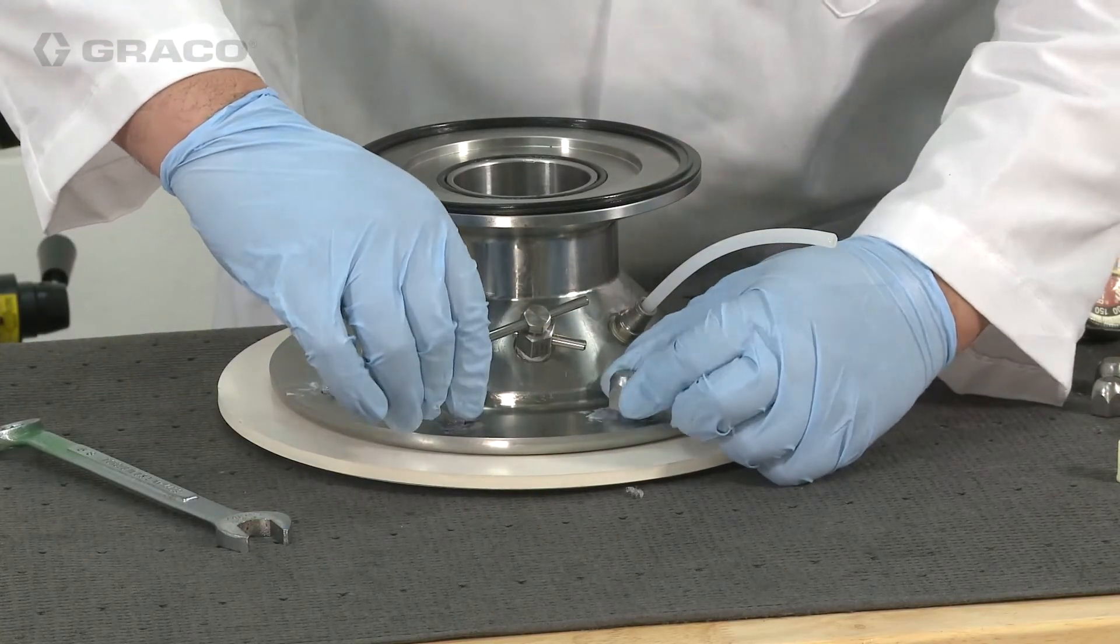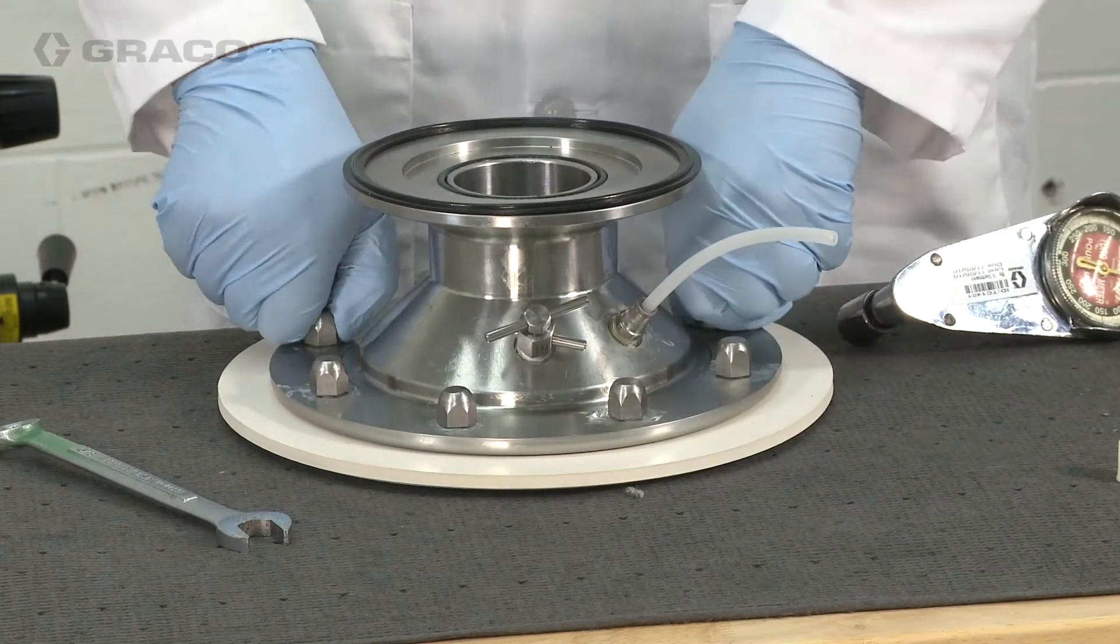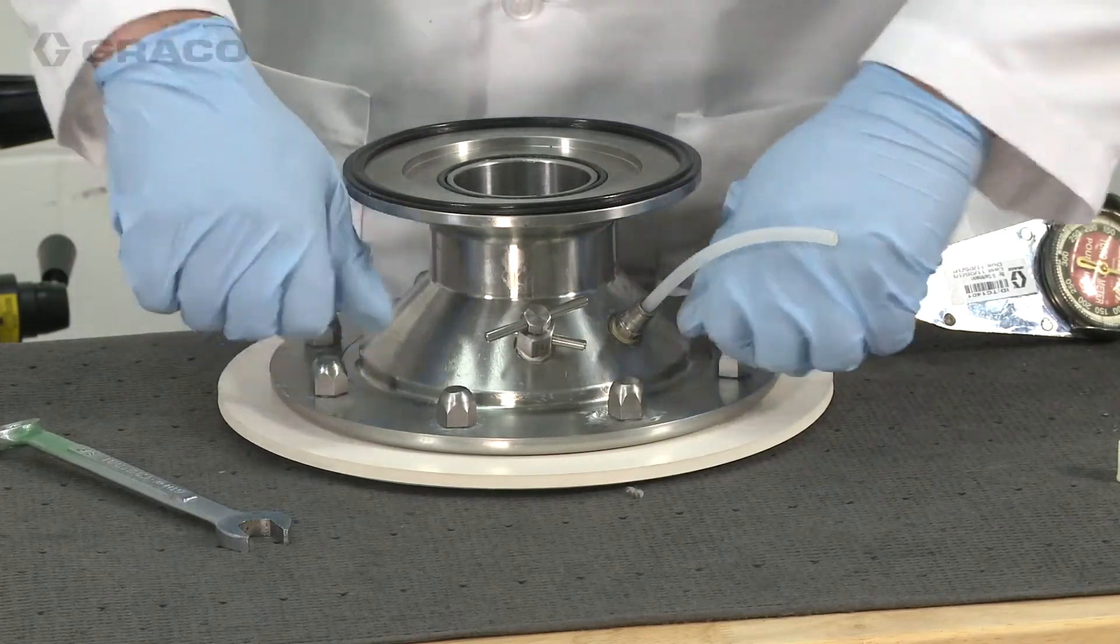Tighten the cap nuts hand-tight, then torque to 40 to 50 inch pounds in a criss-cross pattern.